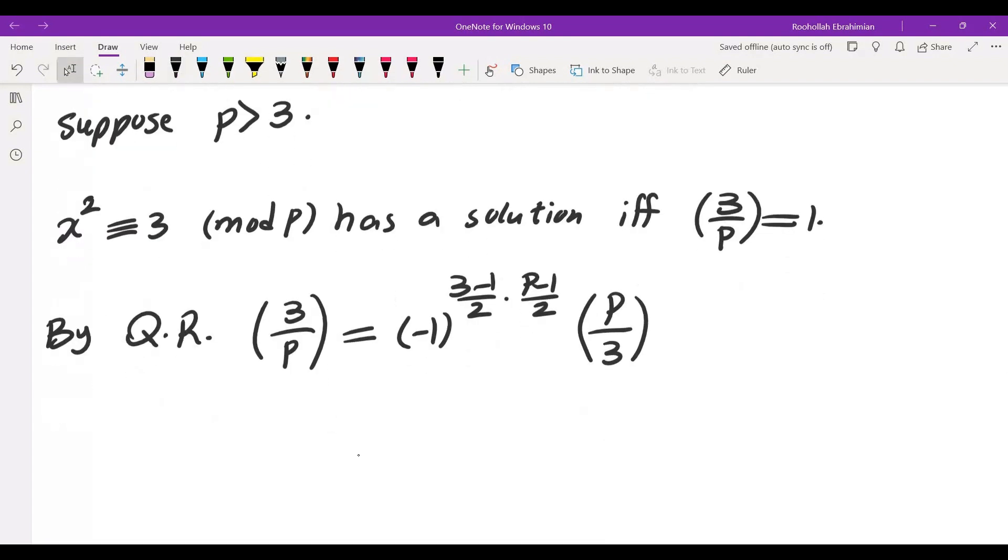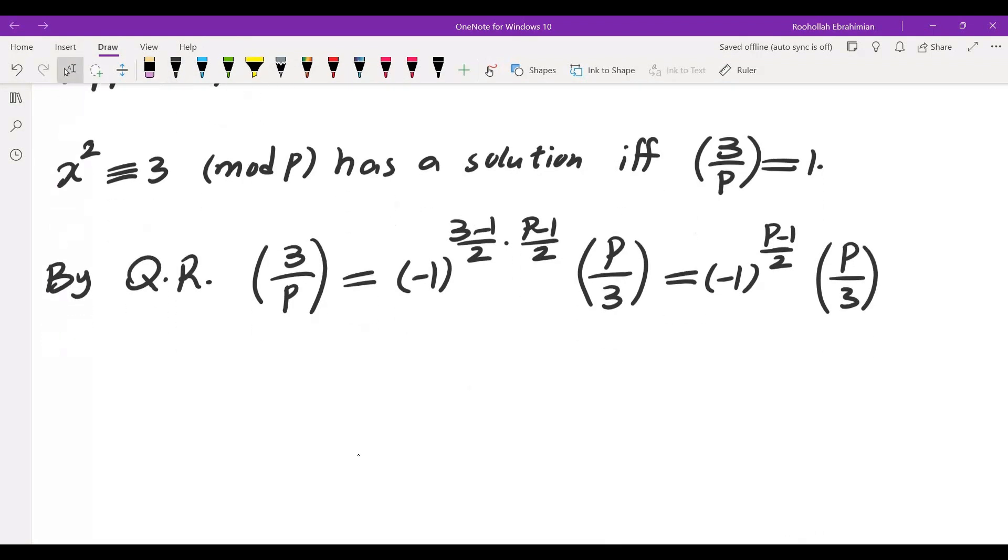So in other words, we need to figure out whether P is a quadratic residue or not. So this is negative 1 to the power of P minus 1 over 2 and then P over 3. We need to figure out whether P is a quadratic residue mod 3.